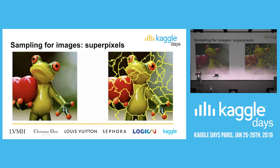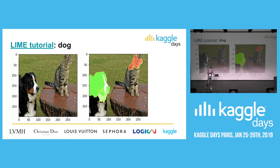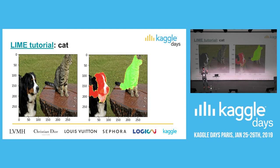LIME's proposed solution is to use superpixels - big regions of the image that look similar inside, whereas different superpixels look different. It's an unsupervised way of breaking an image into parts like a mosaic. Instead of changing individual pixels, we sample superpixels - for example, we can black out some superpixels and see how the prediction changes. For the cat example, the superpixels aligned with the cat boundary and the model correctly explains the cat prediction.